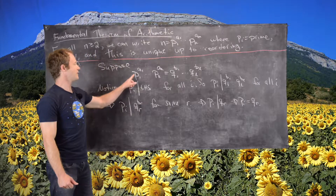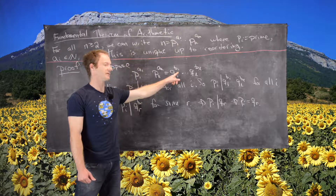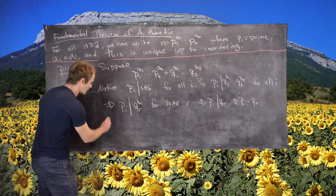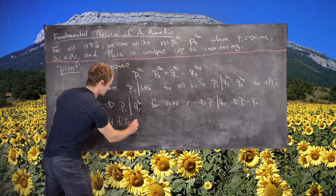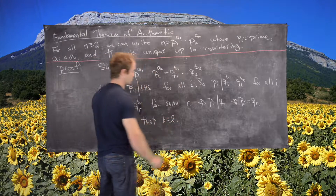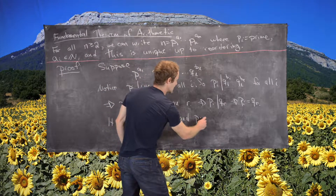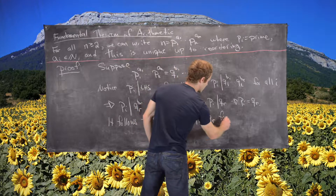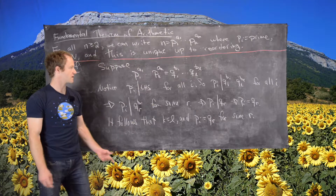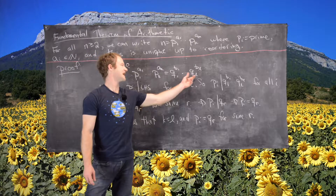That means every prime on the left-hand side is one of the primes on the right-hand side. And likewise, by a similar argument, every one of the q's is one of the p's. So it follows that k equals l, and pi equals qr for some r — meaning not only do we have the same number of primes, but we have the same primes exhibited.